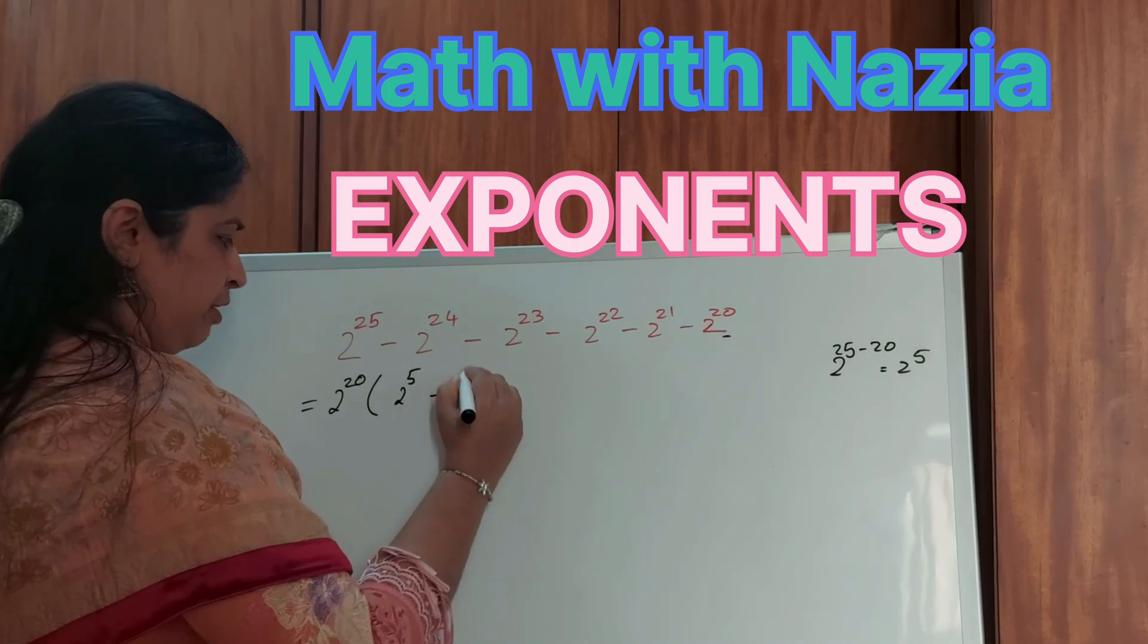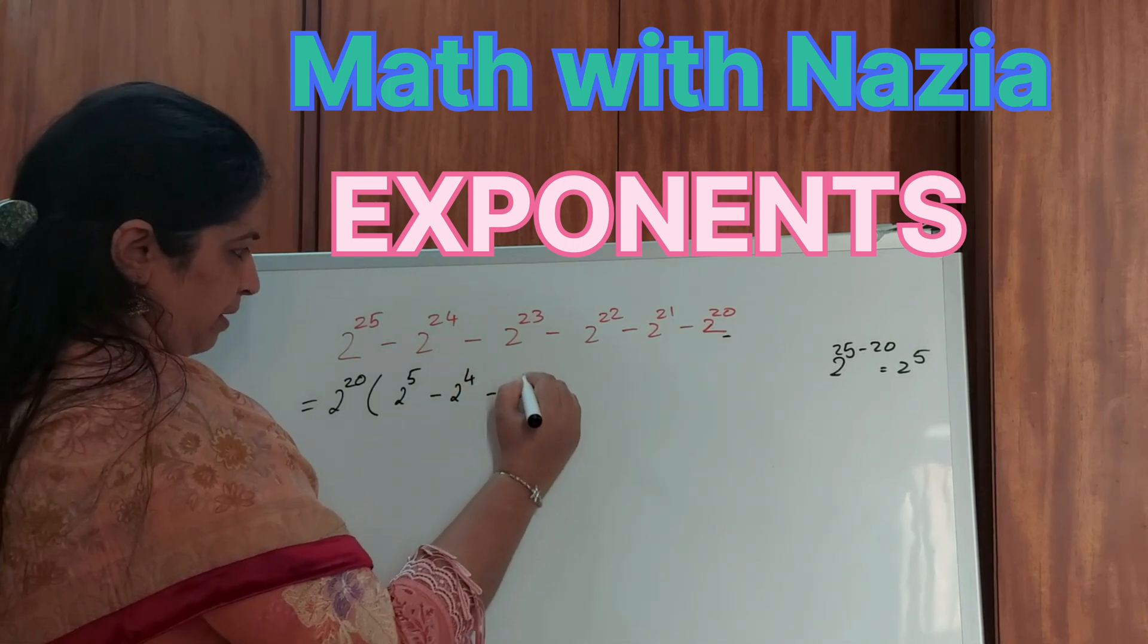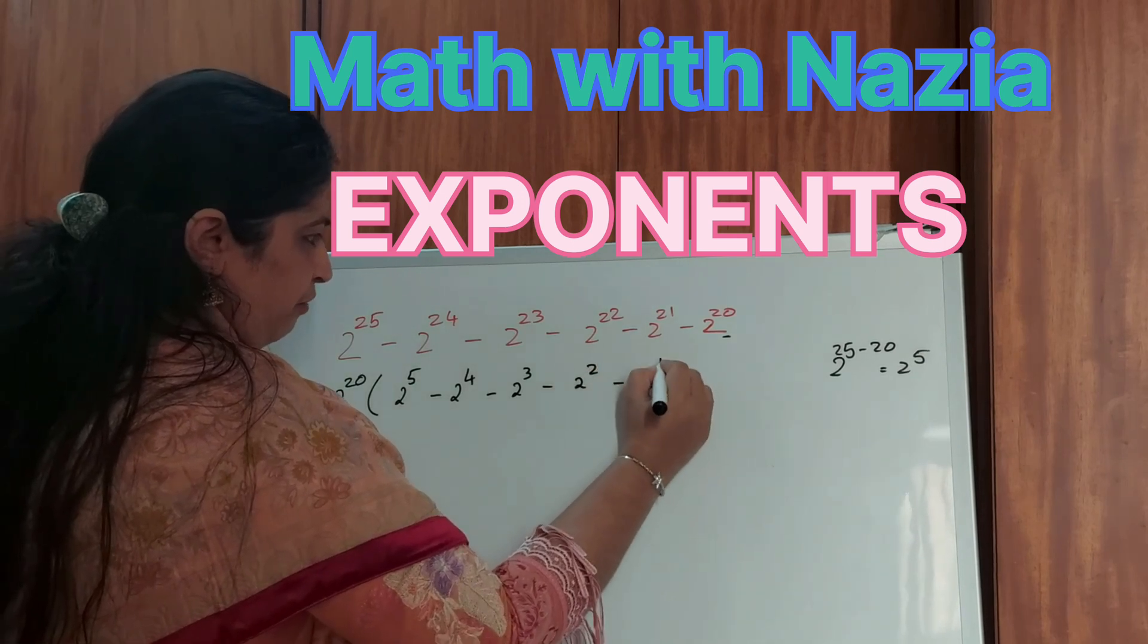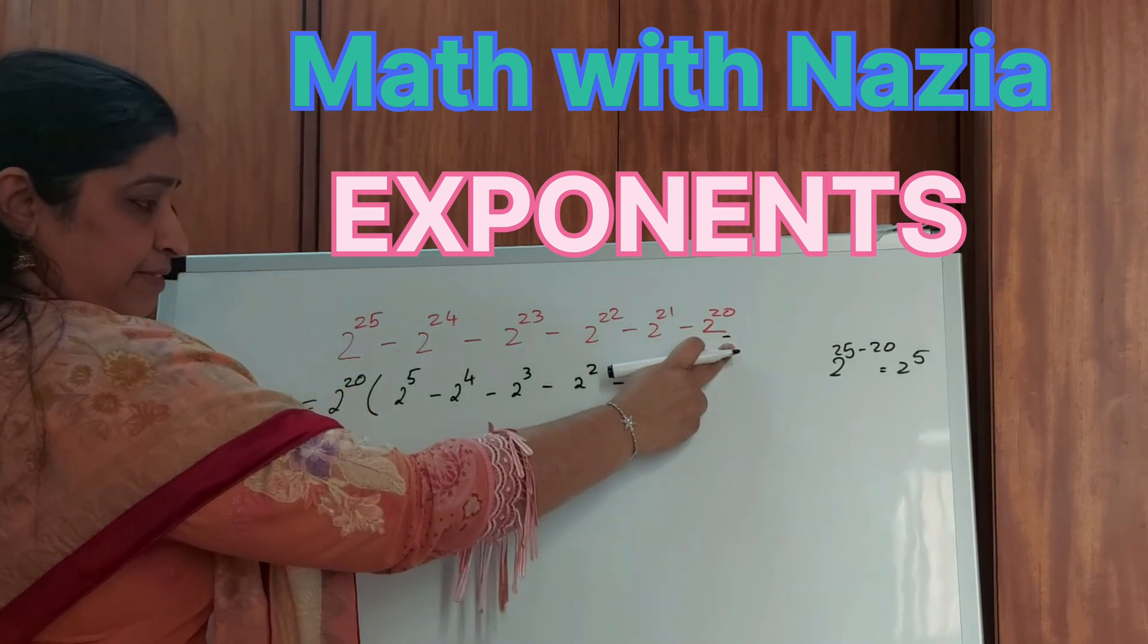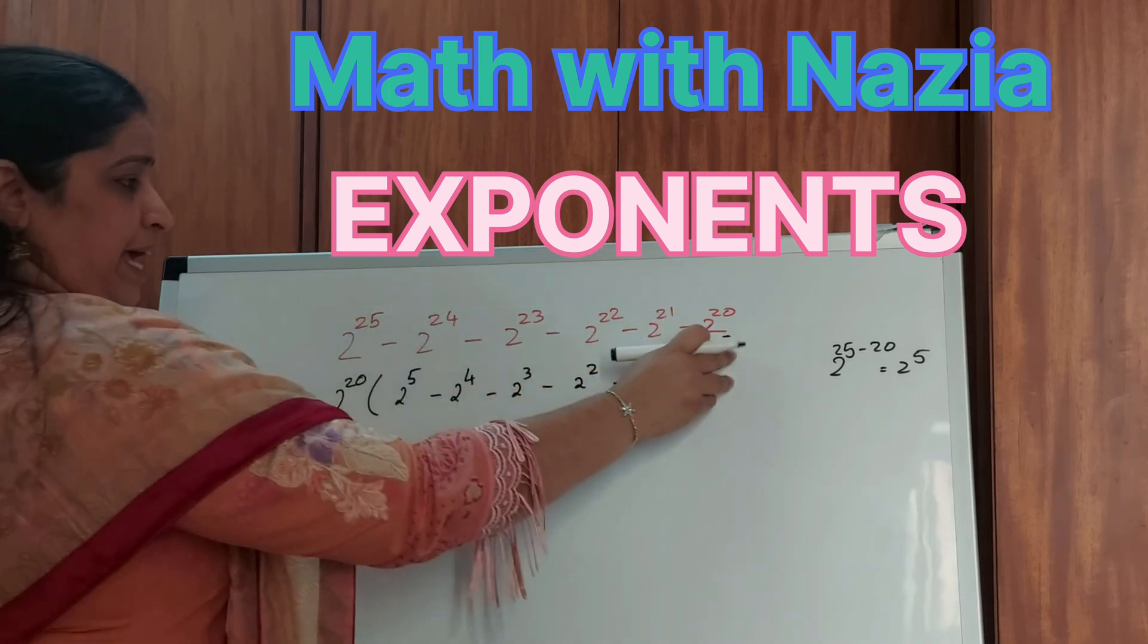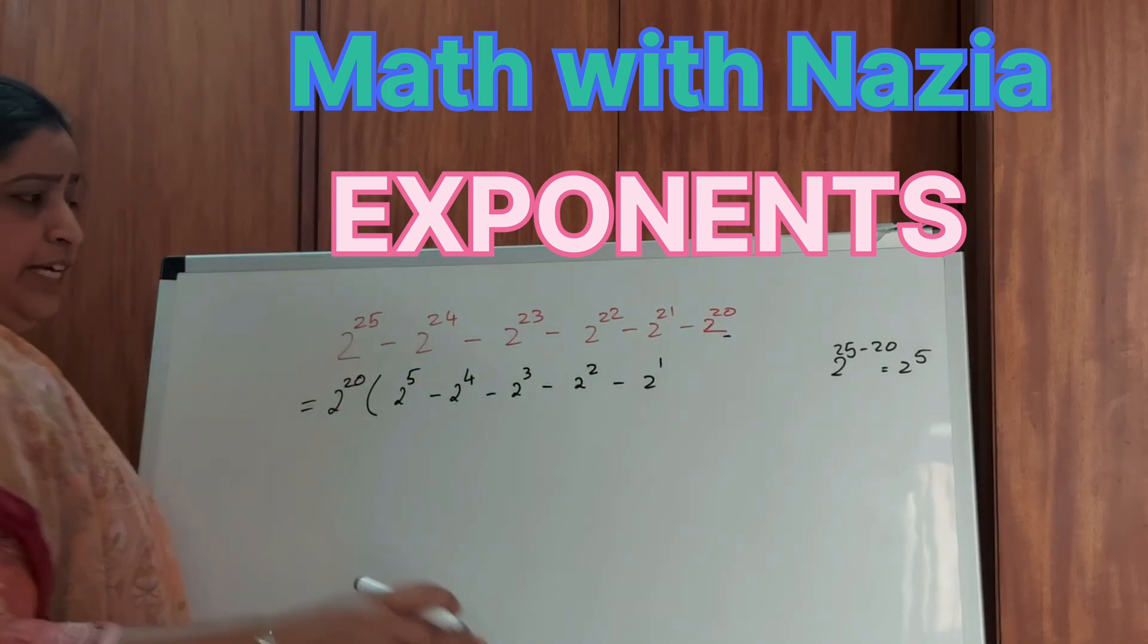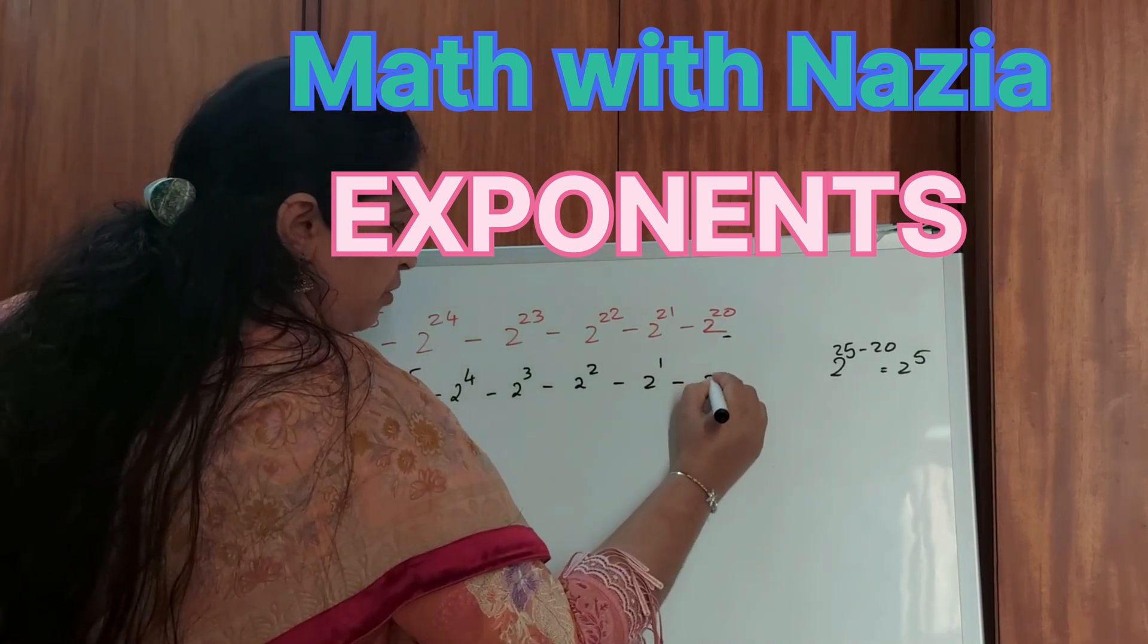Here I will have minus 2 to the power of 4 minus 2 to the power of 3 minus 2 to the power of 2 minus 2 to the power of 1, and you should not leave this. You should keep it as minus 2 to the power of 0.